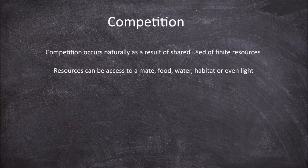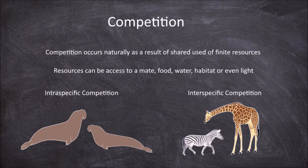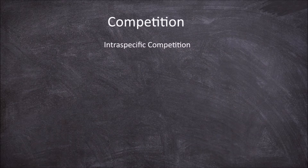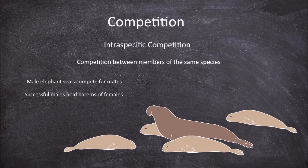There are two types of competition: intraspecific competition and interspecific competition. Intraspecific competition is competition between members of the same species. An example of intraspecific competition over finding a mate is seen between male northern elephant seals. Male elephant seals compete with one another to dominate the breeding grounds. The successful males hold harems of females in the breeding grounds and are responsible for the majority of reproduction occurring during the breeding season.